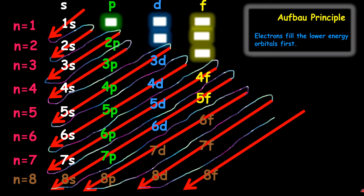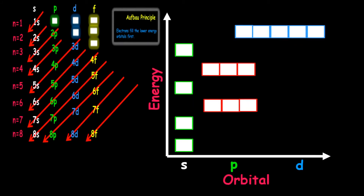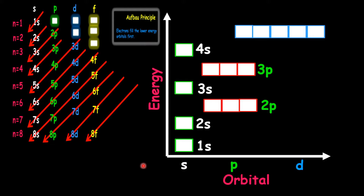Now we jump into another concept where this is applied. Looking at our chart on the left, you can see the energy values in terms of filling order: first the 1S, then 2S, then 2P, then 3S, then 3P, then 4S, and then it goes to 3D orbitals. That's how it works in terms of filling electrons on the orbitals — and that's the off-bar principle.